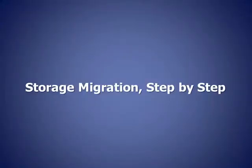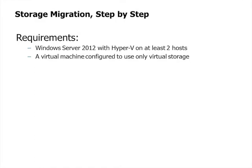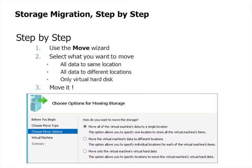So without further delay, let's see storage migration in action. The requirements to use Hyper-V storage migration are easy: you'll need two hosts with Windows Server 2012 Hyper-V and a virtual machine using only virtual storage. The steps involve using the move wizard in Hyper-V Manager, selecting what you want to move — all data to the same location, all data to different locations, or only a virtual machine hard disk to a new location — and then clicking Finish.